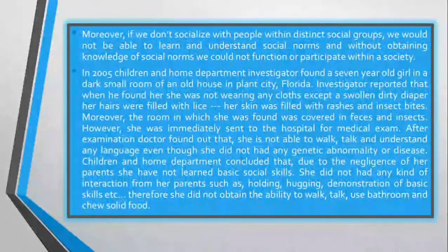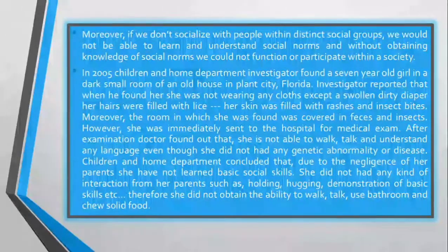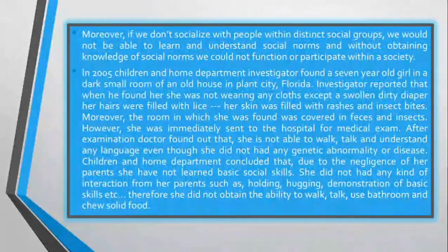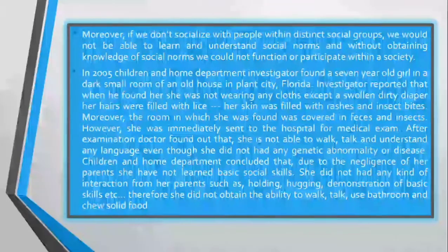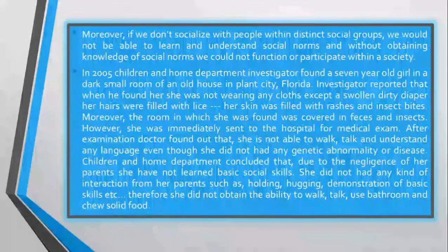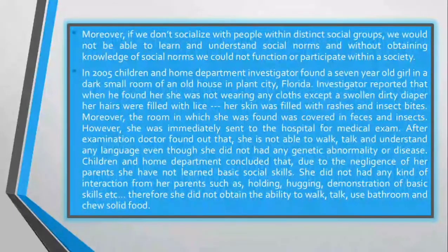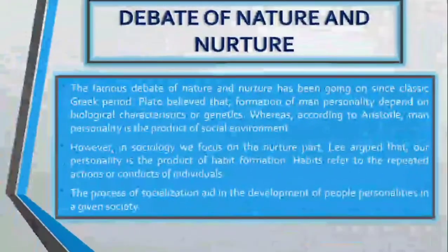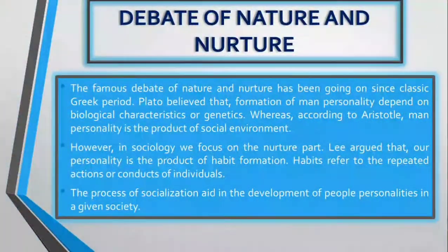She was immediately sent to the hospital for a medical exam. After examination, the doctor found out that she was not able to walk, talk, or understand any language, even though she did not have any genetic abnormality or disease. The Children and Home Department concluded that due to the negligence of her parents, she had not learned basic social skills — she had no interaction such as holding, hugging, or demonstration of basic skills — and therefore did not obtain the ability to walk, talk, use the bathroom, or choose solid food.